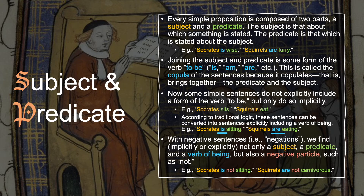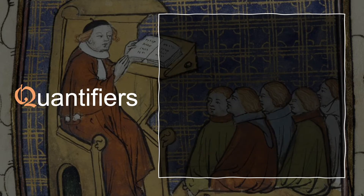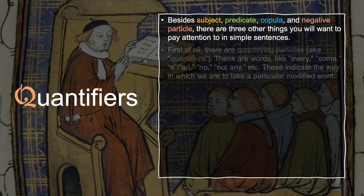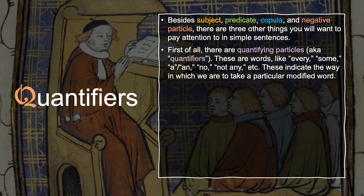Likewise, in the sentence 'Squirrels are not carnivorous,' we have the subject Squirrels, the copula are, the negative particle not, and the predicate carnivorous. Besides subject, predicate, copula, and negative particle, there are three other things you will want to pay attention to in simple sentences. First, there are quantifying particles, also called quantifiers—words like every, some, a, an, no, not any, etc. These indicate the way in which we are to take a particular modified word.